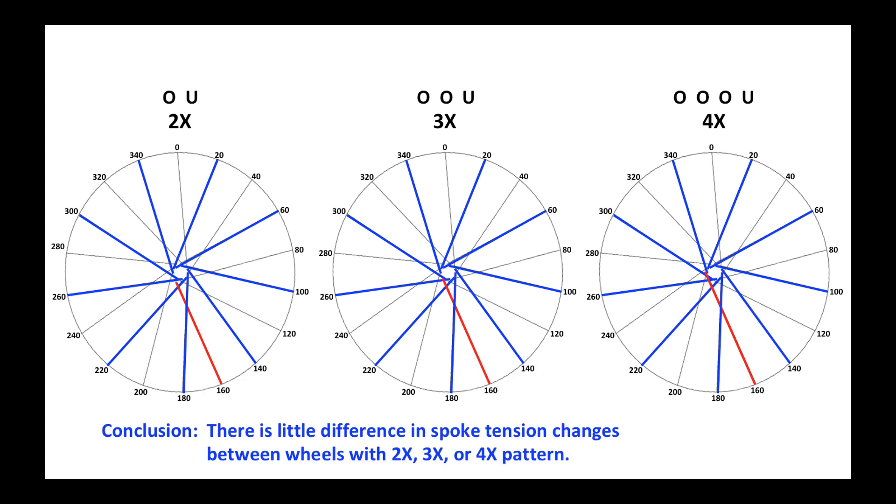So we can conclude a somewhat surprising result that there is little difference in spoke tension changes between wheels with a two cross, three cross, or four cross pattern.